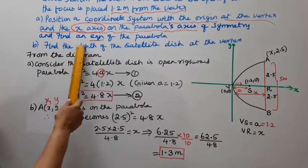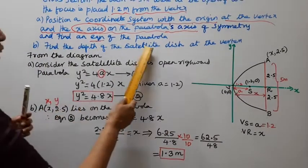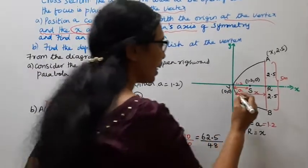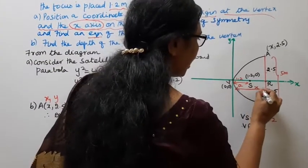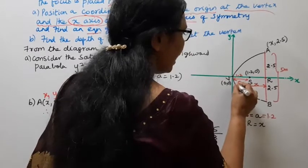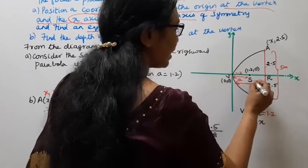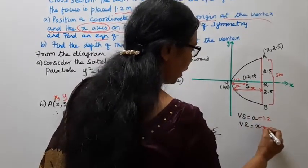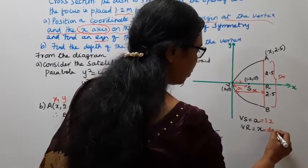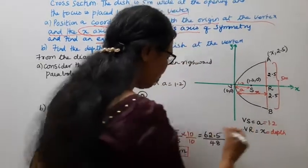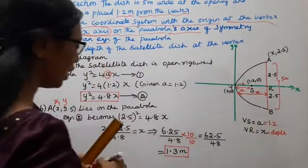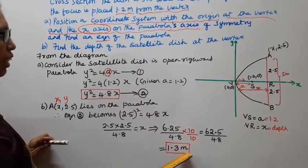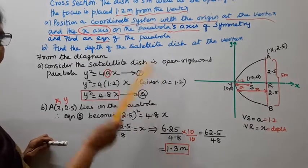The second question asks to find the depth of the satellite dish at the vertex. From the calculation, the depth of the satellite dish is 1.3 meters.